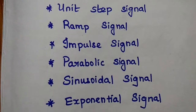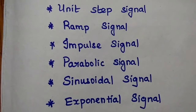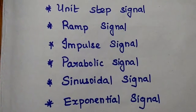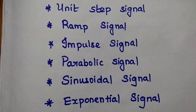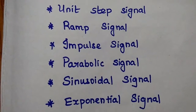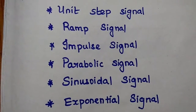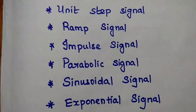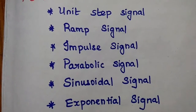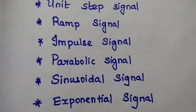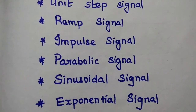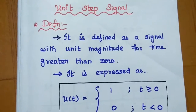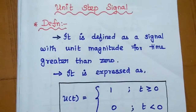Examples of standard signals or standard test signals include: unit step signal, ramp signal, impulse signal, parabolic signal, sinusoidal signal, exponential signal, and many more — such as signum signal, pulse signal, and triangular signal.